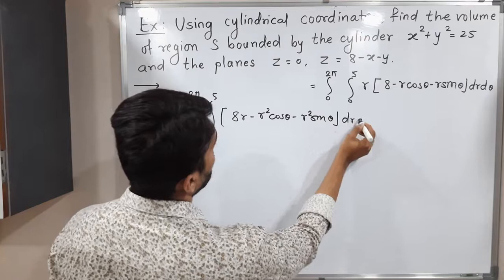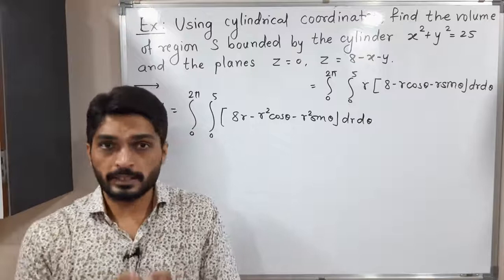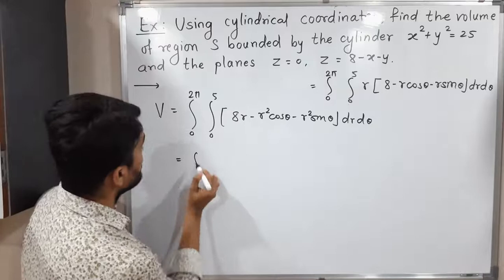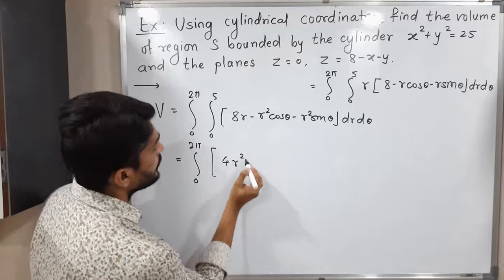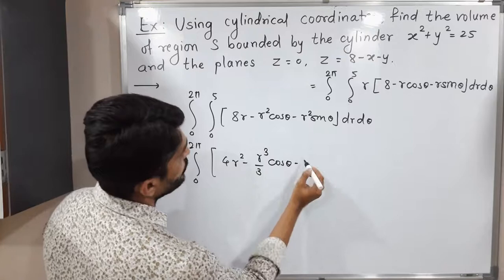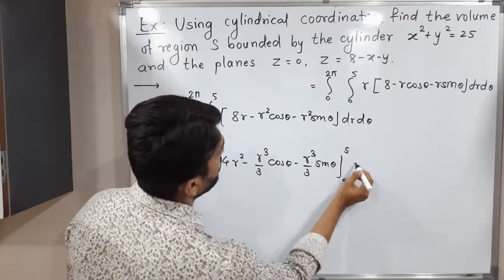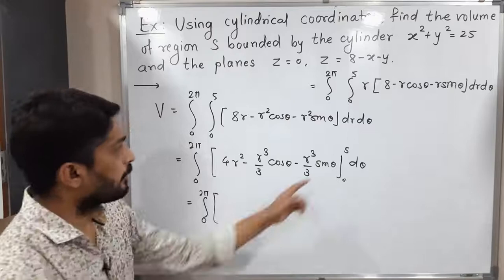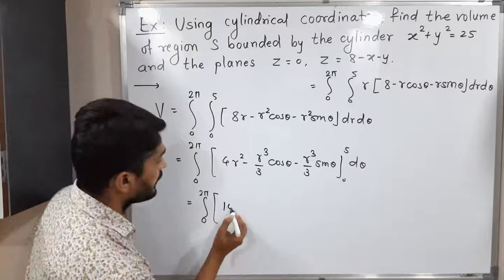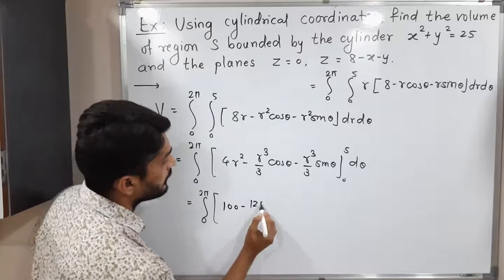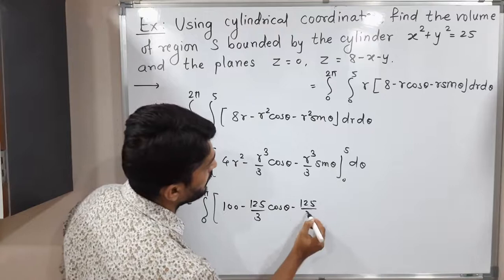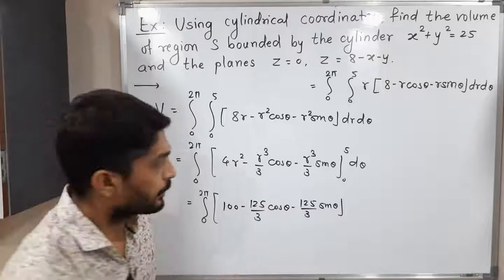Putting in the upper limit r = 5: 4 × 25 = 100, and 5³ = 125. So we get 100 − (125/3) cosθ − (125/3) sinθ. The lower limit gives 0. Integrating with respect to θ: 100 integrates to 100θ, integral of cosθ is sinθ, and integral of sinθ is −cosθ. So the result is 100θ − (125/3) sinθ + (125/3) cosθ evaluated from 0 to 2π.